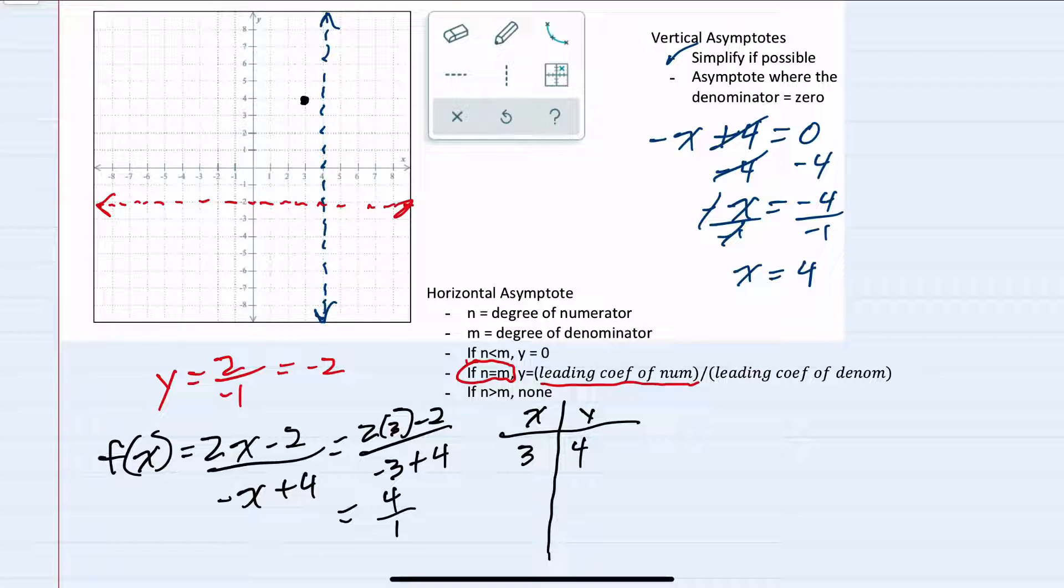And then another point to the left of that vertical asymptote could be where x equals 2. Substituting that in, replacing x with 2, now gives us 4 minus 2 in the numerator, which is 2. And in the denominator, negative 2 plus 4 is 2. So our y value is 1. We have the point (2, 1).